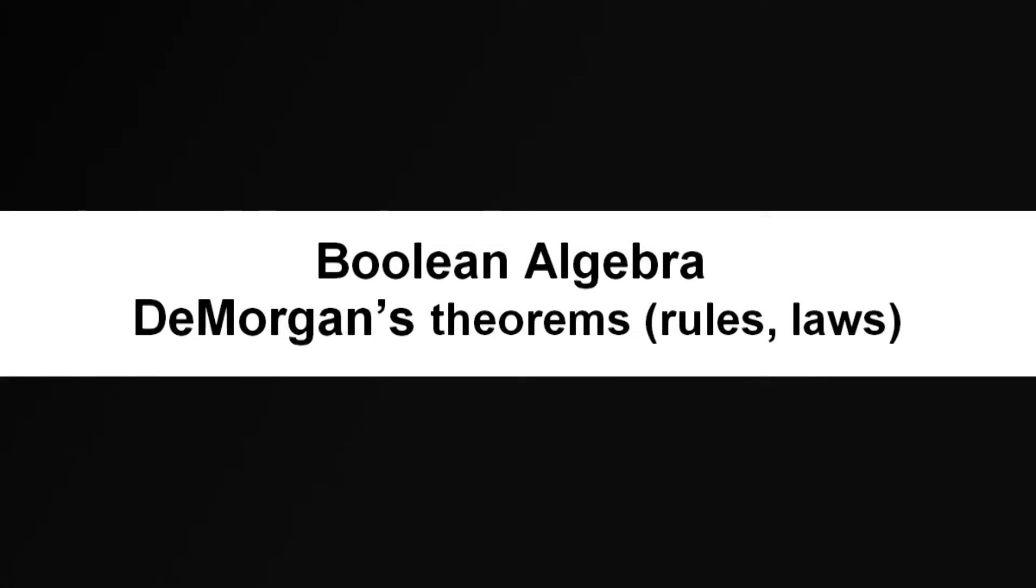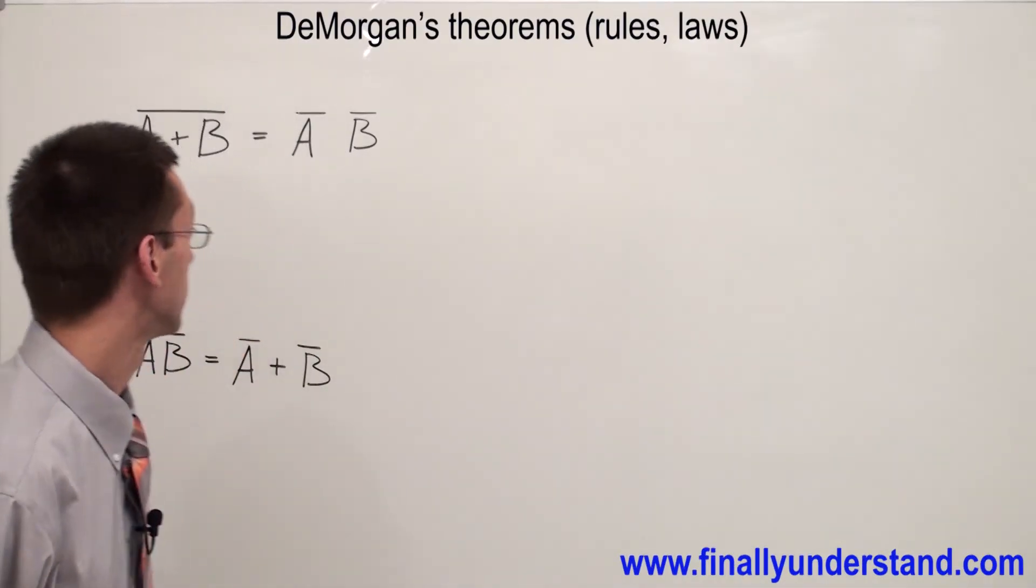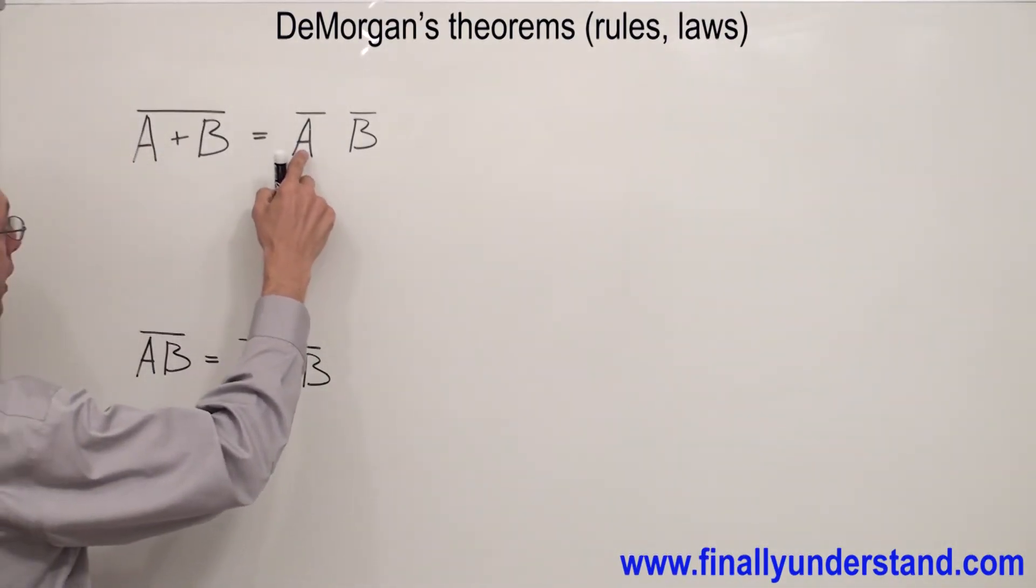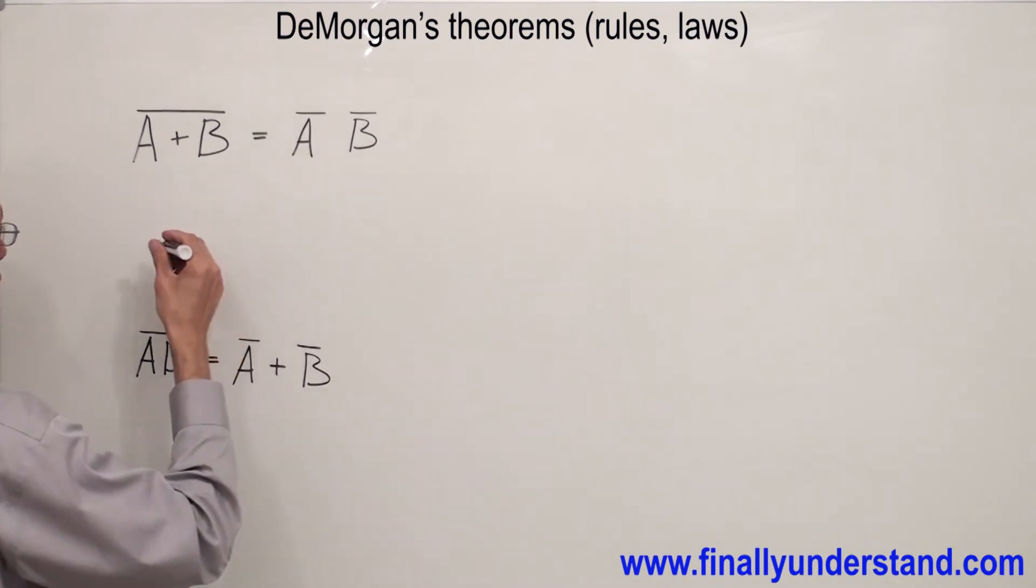DeMorgan's theorems. The very first theorem which I have on the board says that I can replace NOR gate with AND gate and two inverters.